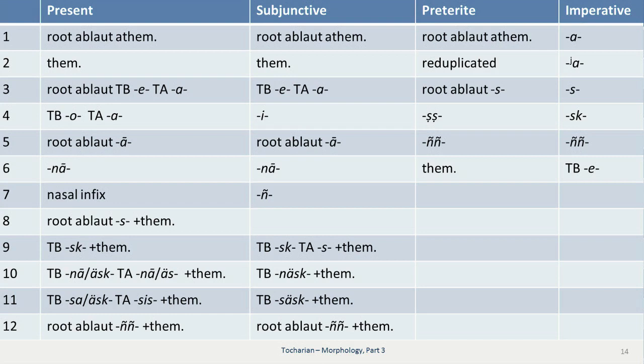And let's look at the present. So our first class has root ablaut and is athematic. Our second class are the thematic presents. The third class also has root ablaut, at least in some cases, and is characterized by a special suffix ā and ā for Tocharian B, ā for Tocharian A. Then the fourth class has no root ablaut and has the special suffixes Tocharian B o, Tocharian A a. The fifth class has root ablaut and a suffix.